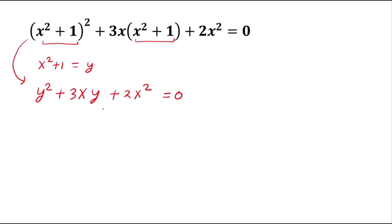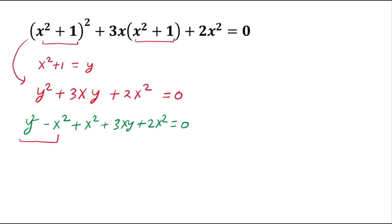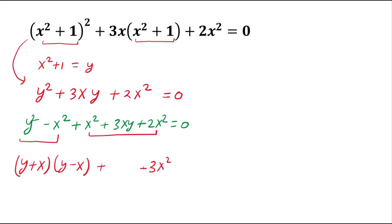The left-hand side is factorizable. Look carefully: in y², if we subtract x² and add x², then with 3xy + 2x², we get (y² - x²) + 3x² + 3xy = 0. The first part is a difference of two squares: (y + x)(y - x), and the remaining terms give 3x(x + y) = 0.